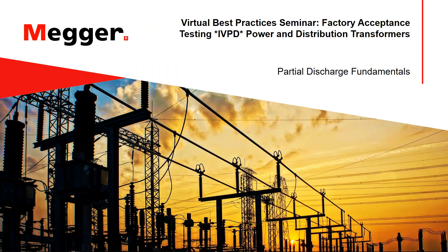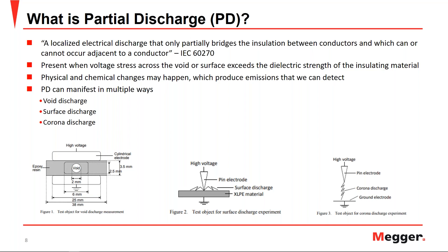On to partial discharge fundamentals. According to the IEC 6270, a partial discharge is a localized electrical discharge that only partially bridges the insulation between conductors and which can or cannot occur adjacent to a conductor. Partial discharges are a consequence of local electrical stress concentrations in the insulation or on the surface of the insulation. Partial discharge is present when the voltage stress across the void or the surface of an insulation exceeds the dielectric strength of that insulating material. When this happens, several physical and chemical changes can produce detectable emissions: dielectric losses, electromagnetic transients, pressure waves, sound, light, heat, and chemical changes including ozone production, which is particularly corrosive in encapsulated environments.